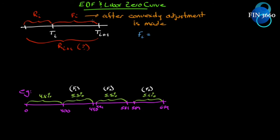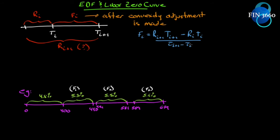This rate is equal to the rate for r(i+1) times t(i+1), minus ri times ti, minus this interest rate for that period of time, divided by ti+1 minus ti. You'll recall from chapter 4 we simply isolated the variable we were interested in, which is r(i+1).